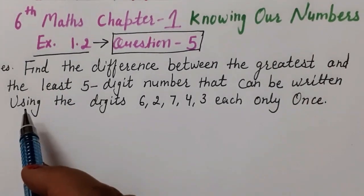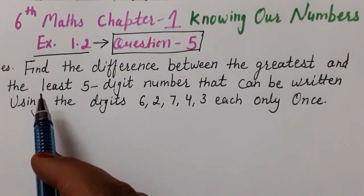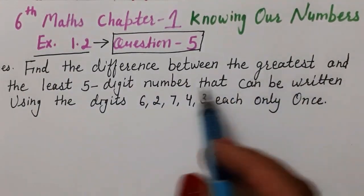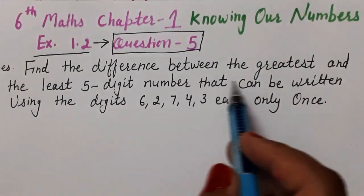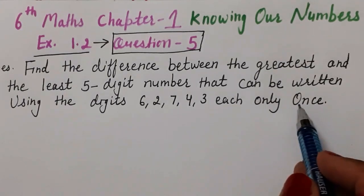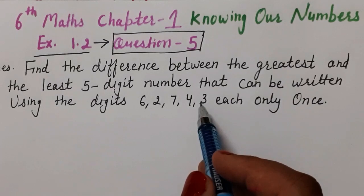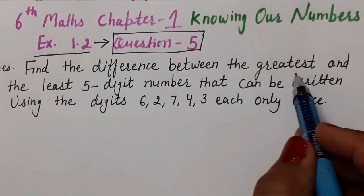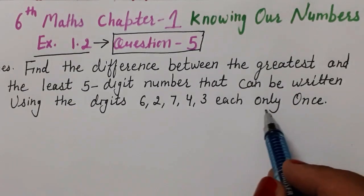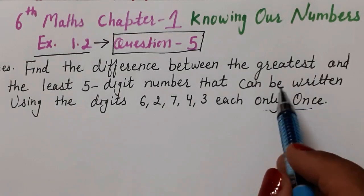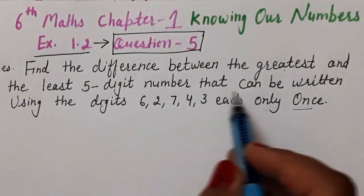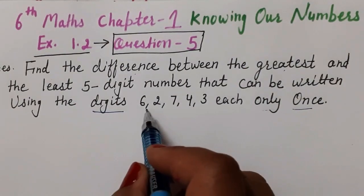Hello everyone, welcome to my channel. This is Power by 7 Sinwani, Exercise 1.2, Question Number 5. The question is: find the difference between the greatest and the least 5-digit number that can be written using the digits 6, 2, 7, 4, 3 — each only once. So we are given these 5 digits and we need to find the difference between the greatest and least 5-digit numbers formed.